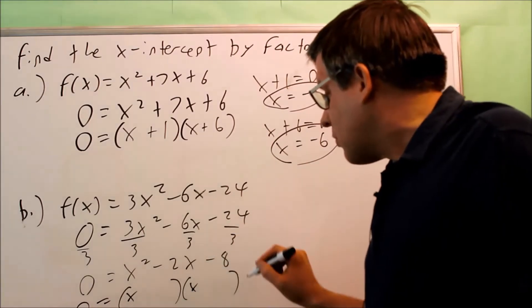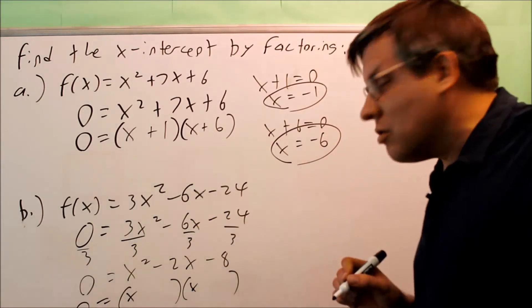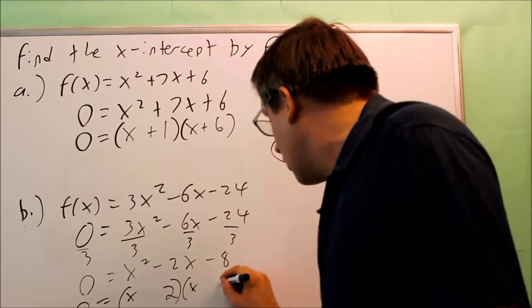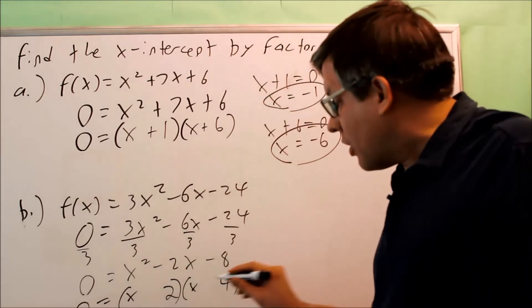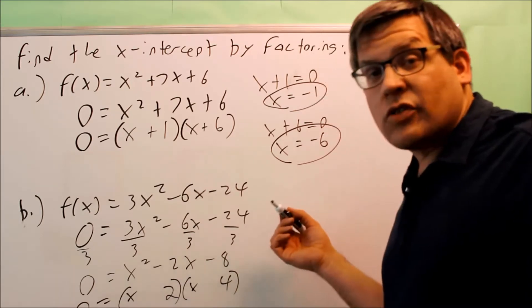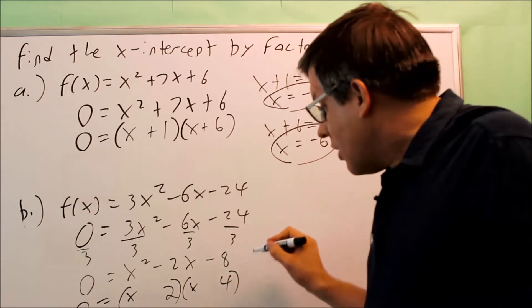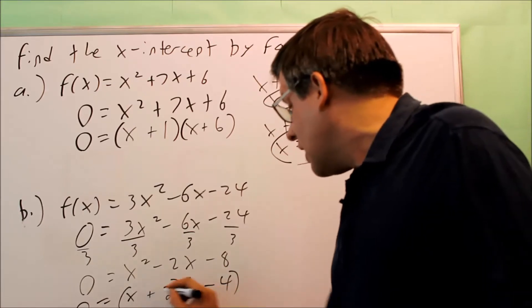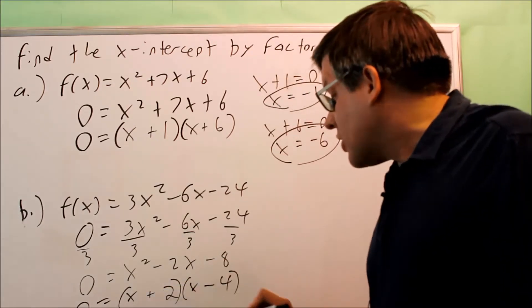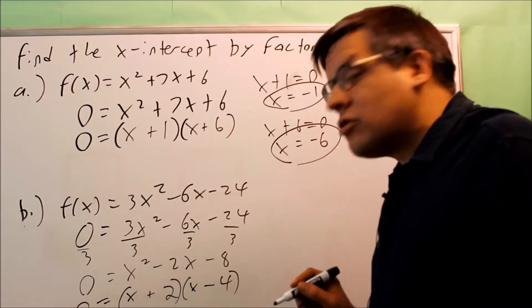And then numbers that multiply to make negative 8 and add to be negative 2, you're going to use 2 and 4. And I know one of these will have to be negative because 2 times 4 is positive 8. I need it to be negative 8. And so you want to pick this one to be negative because if I take a negative 4 and add positive 2 to it, I'll get negative 2 as a result.